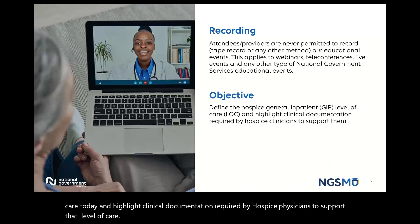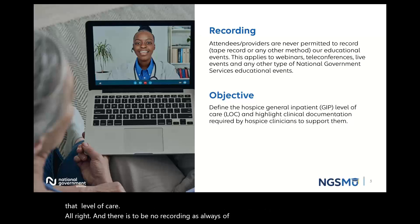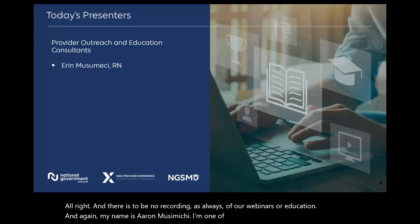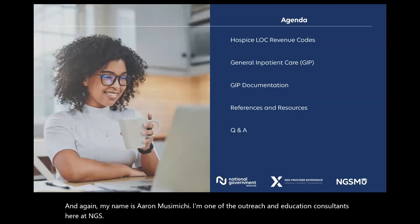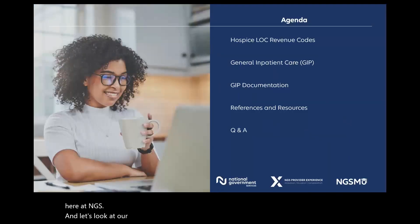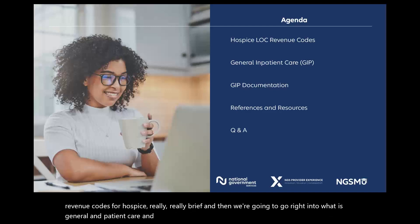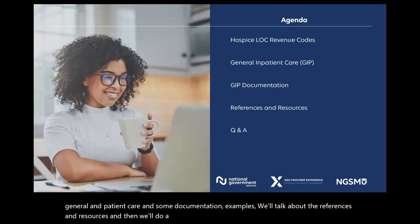There is to be no recording, as always, of our webinars for education. And my name is Erin Musumici — I'm one of the outreach and education consultants here at NGS. Let's look at our agenda. We're just going to touch real quick on those level of care revenue codes for hospice, really brief, and then we're going to go right into what is general inpatient care and some documentation examples. We'll talk about the references and resources, and then we'll do a little Q&A at the end.